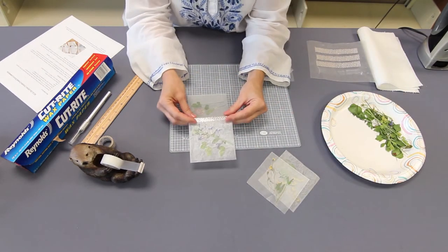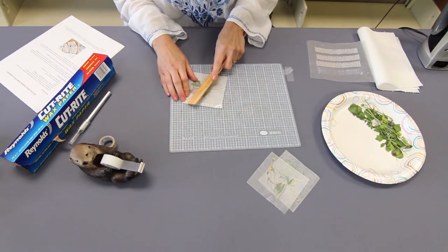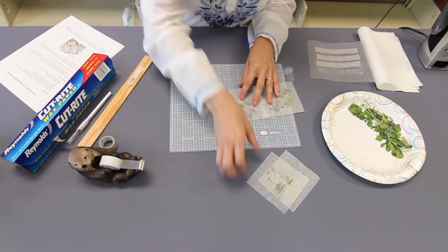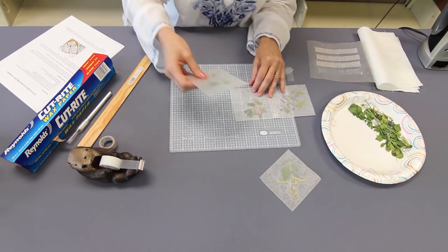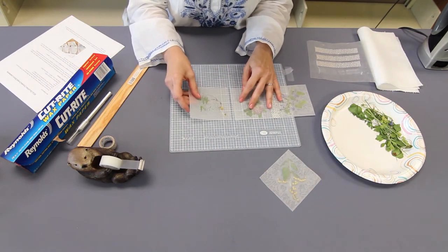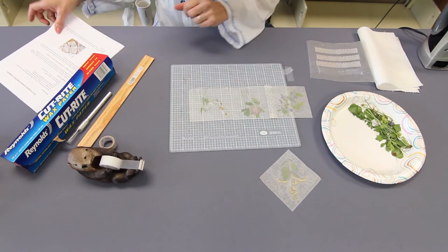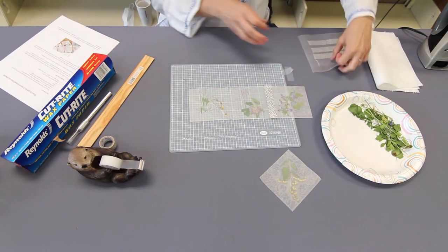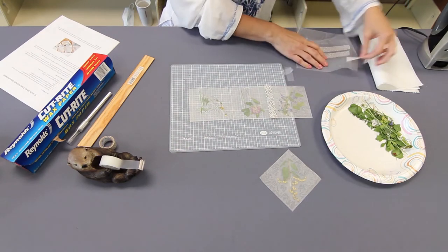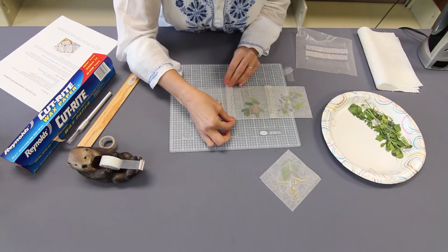Fold it in half so that you get a nice sharp crease. Ruler comes in handy once again for that. Seam up. Seam up. Another piece of washi tape.